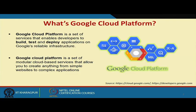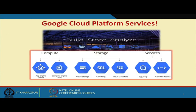Google Cloud Platform is a set of services that enables developers to build, test, and deploy applications on Google's reliable infrastructure. As stated on their web resources — cloud.google.com and developers.google.com — Google Cloud Platform is a set of modular cloud-based services that allow you to create anything from a simple website to complex applications.